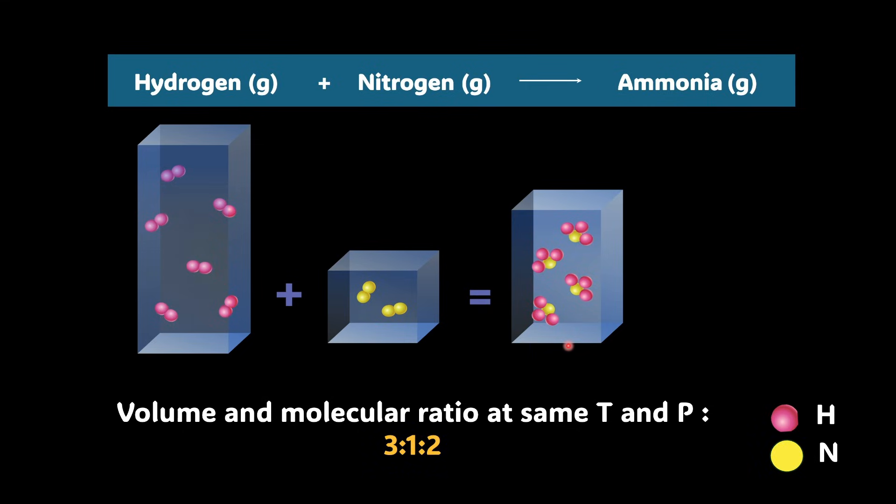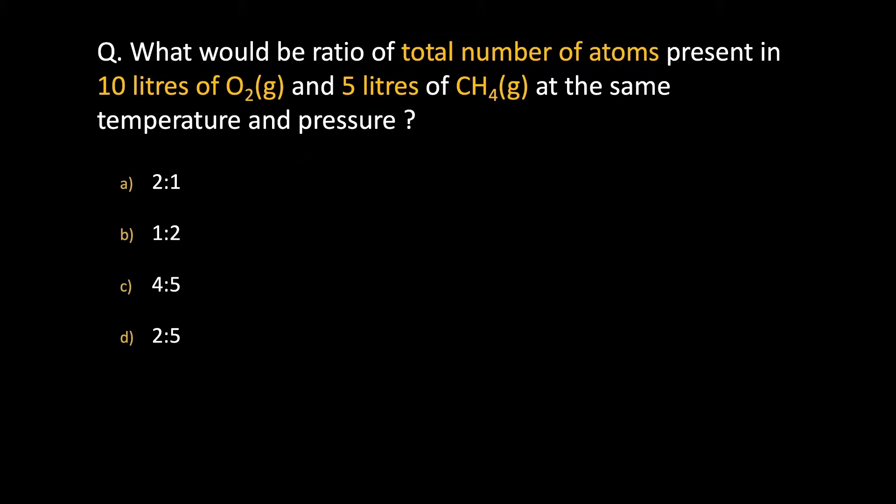Now that we know how to apply Avogadro's law, let's take a look at a question. The question says, what would be the ratio of total number of atoms present in 10 litres of oxygen and 5 litres of methane at the same temperature and pressure? Total number of atoms we have to find. Pause the video and do try this question.